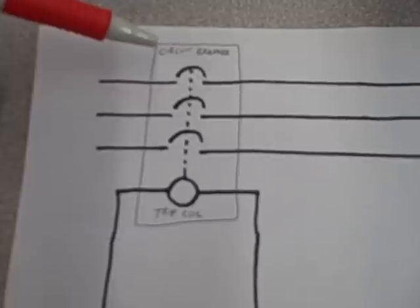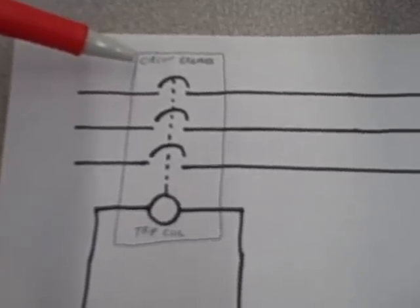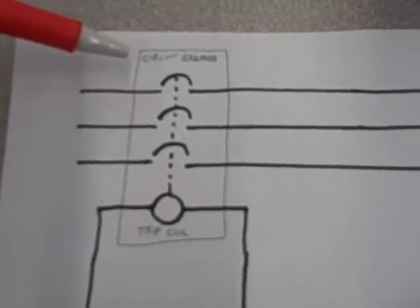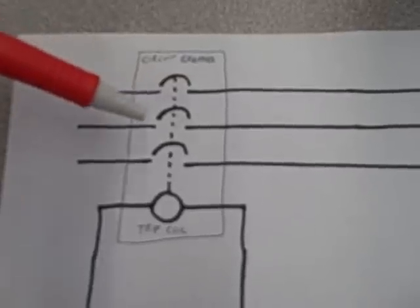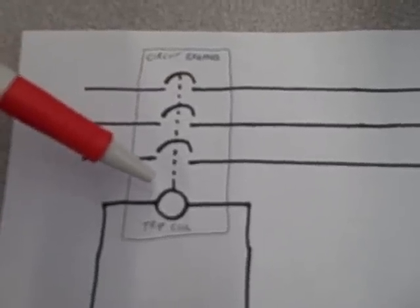So in order for this breaker to break the circuit automatically and to protect it from overcurrent conditions or any other dangerous conditions, we have to have some other device, some external device, send a trip signal to the breaker.